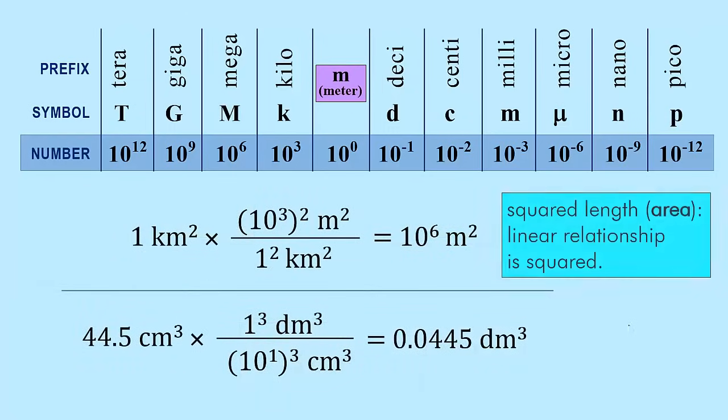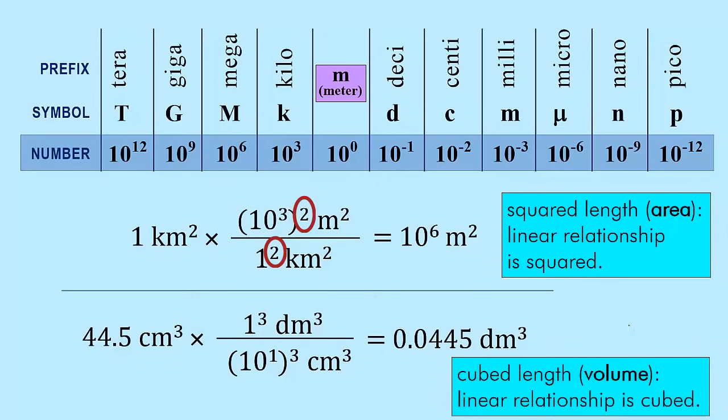So for squared length, which is area, the linear relationship is squared. For cubed length, which is volume, the linear relationship is cubed.